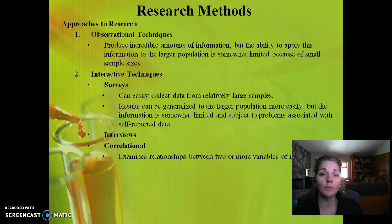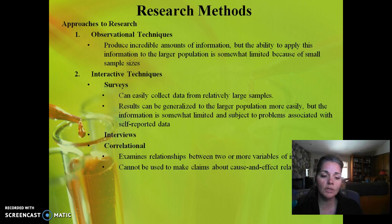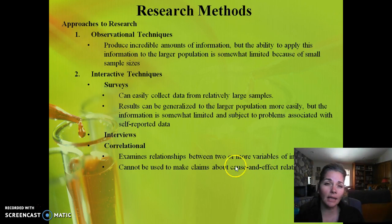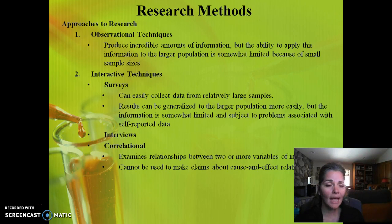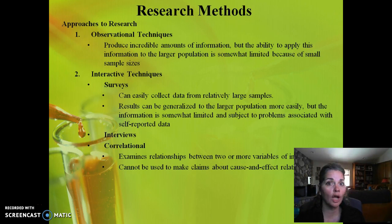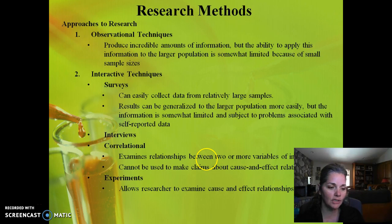Correlational studies examine the relationship between two or more variables. If you look at the word, it's co-relation — relationship between two or more variables. It's limited because we can't determine cause and effect. Just because two variables are related doesn't mean one caused the other. For example, there is a relationship between ice cream sales and crime rates. That doesn't mean increased ice cream sales are causing more crime — there could be some other component contributing to that relationship.